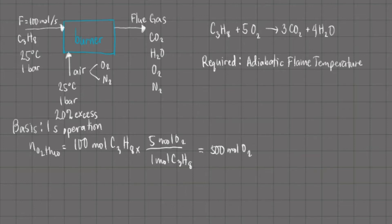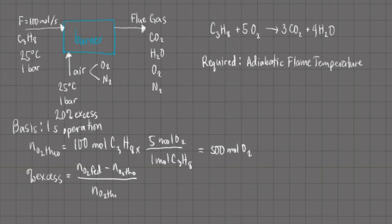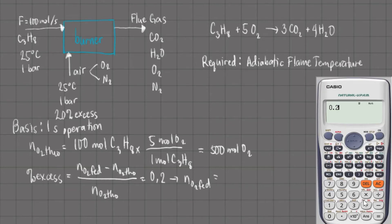This means that under complete combustion, we only need 500 moles of oxygen. From NO2_theo, we use the definition of percent excess to determine the amount of oxygen fed: percent excess = (NO2_fed − NO2_theo) / NO2_theo. Since this is 20% or 0.2, we solve: NO2_fed = 0.2 × 500 + 500 = 600 moles of oxygen.